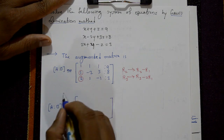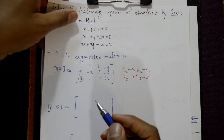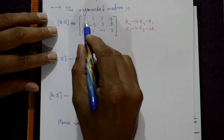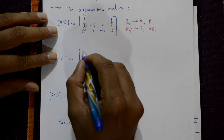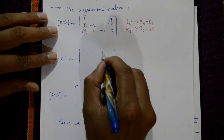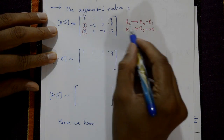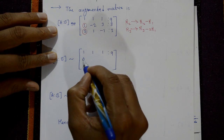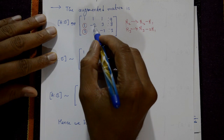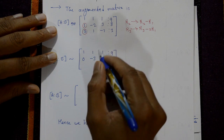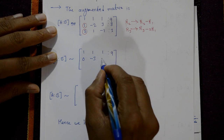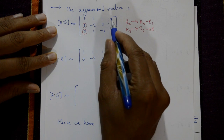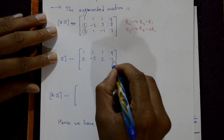Now applying the row operation R2 = R2 minus R1. The first row remains as it is. For the second row: 1 minus 1 is 0, minus 2 minus 1 is minus 3, 3 minus 1 is 2, and 8 minus 9 is minus 1.